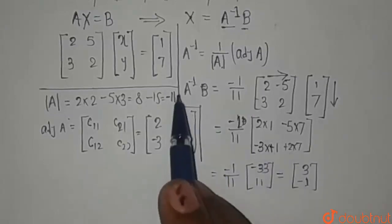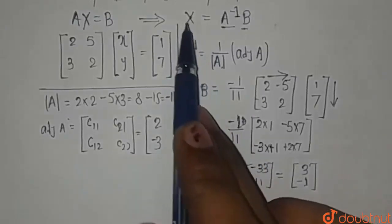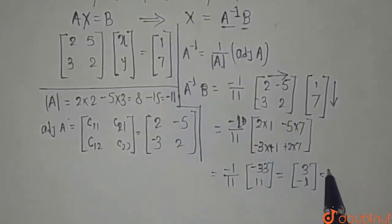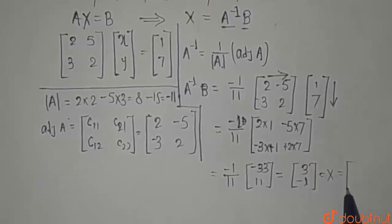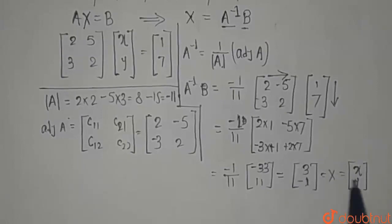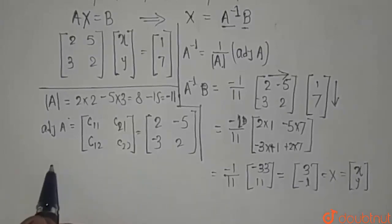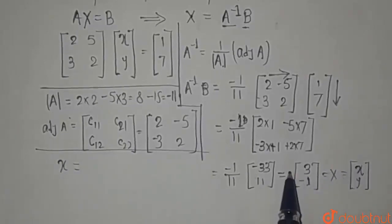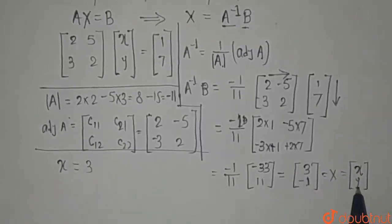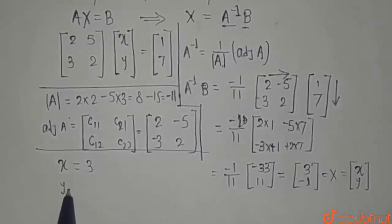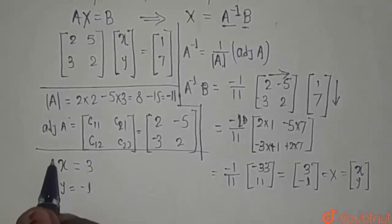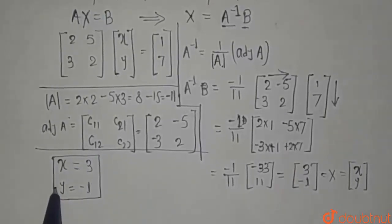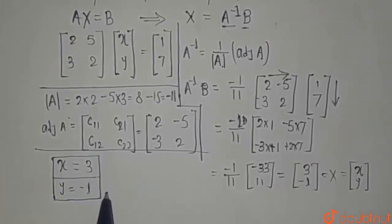We know that A inverse B equals X, so we can write this column matrix as x, y. By comparing the elements, we can say that x equals 3 and y equals minus 1. This is the solution of the above given system of equations. Thank you.